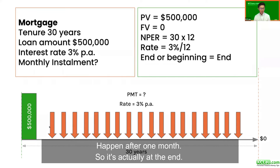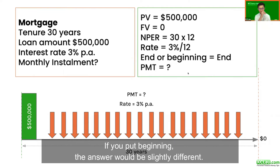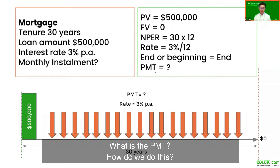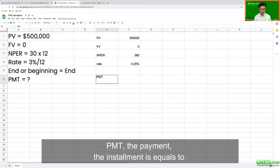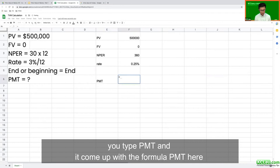The first payment happens after one month, so it's at the end. If you set it to beginning, the answer will be slightly different. To find the PMT, you use the PMT formula in Google Spreadsheet — you type PMT and it gives you the periodic payment for an annuity investment.